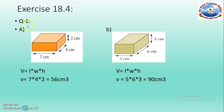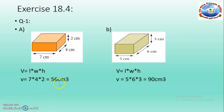Exercise 18.4, question number 1. Here you can see a cuboid where length, width and height is given. Length is 7 cm, width is 4 cm and the height is 2 cm. Volume is equal to length multiplied by width multiplied by height. Just multiply these 3 things and you get the volume, which is equal to 56 cubic centimeters.